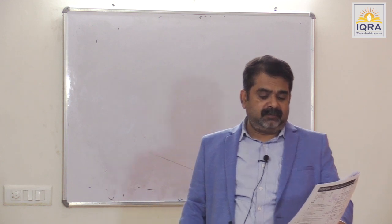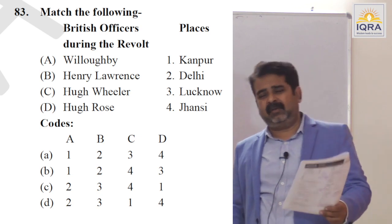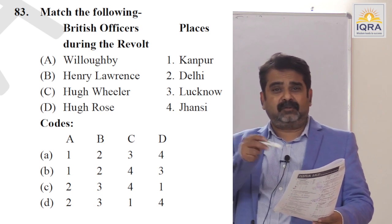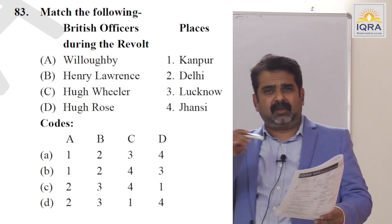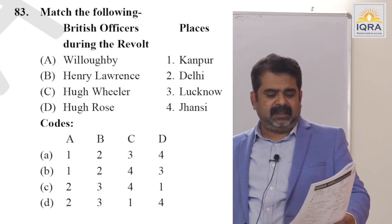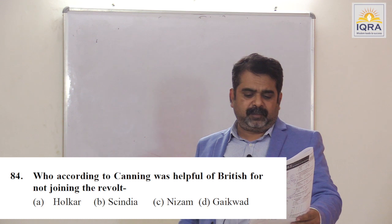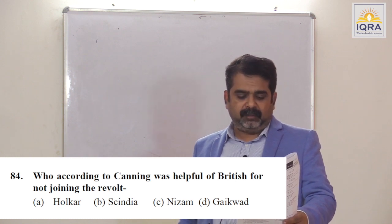British officers during the revolt — very important factual question. You have to take all these officers, their role, and any specific contribution. Answer is D. Who, according to Canning, was helpful for the British for not joining the revolt? Sindhia. Answer is B.